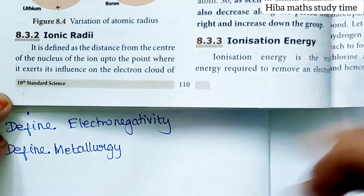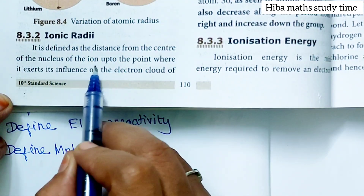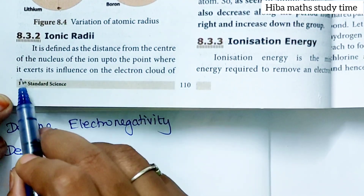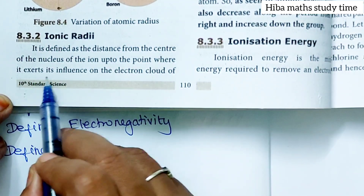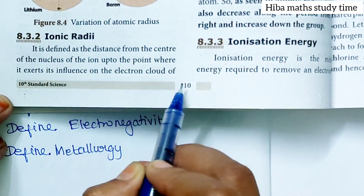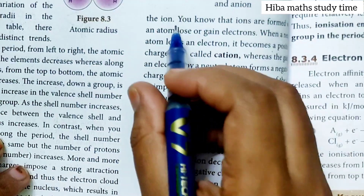Ionic radius is defined as the distance from the center of the nucleus of the ion up to the point where it exerts its influence on the electron cloud of the ion.